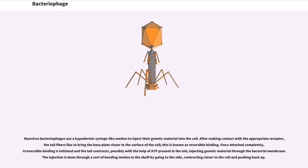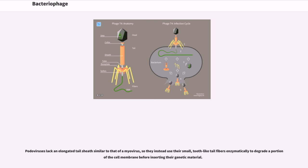Myovirus bacteriophages use a hypodermic syringe-like motion to inject their genetic material into the cell. After making contact with the appropriate receptor, the tail fibers flex to bring the base plate closer to the surface of the cell — known as reversible binding. Once attached completely, irreversible binding is initiated and the tail contracts, possibly with the help of ATP present in the tail, injecting genetic material through the bacterial membrane via a bending motion. The podoviruses lack an elongated tail sheath similar to that of myovirus, so they instead use their small, tooth-like tail fibers enzymatically to degrade a portion of the cell membrane before inserting their genetic material.